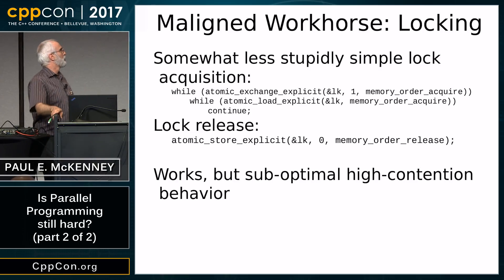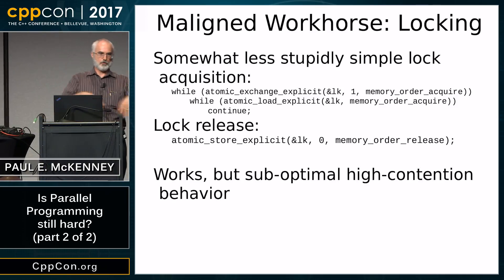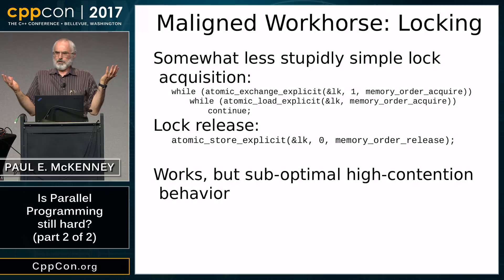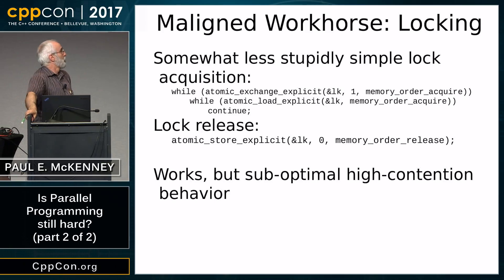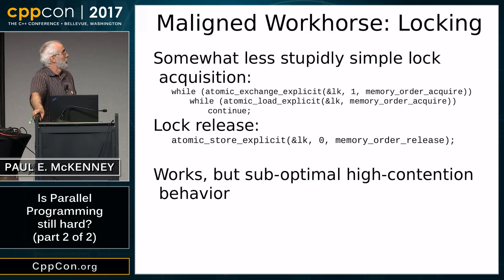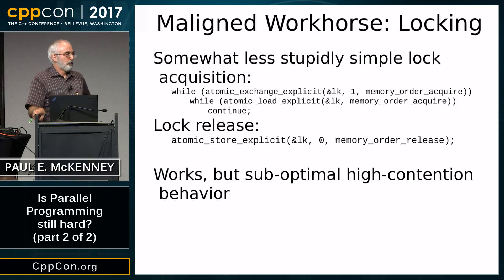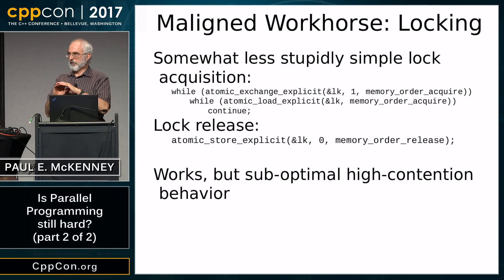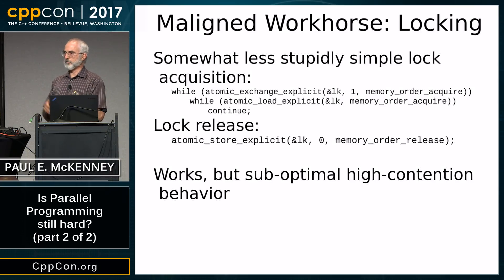We can make something smarter by not doing the exchange over and over — that just batters the cache line around all CPUs. Instead, use a while loop spinning on a plain read, and only once we see the lock is released do we attempt the atomic read-modify-write to acquire it. This way, instead of doing a read-modify-write on the cache line each time, we spin waiting for the value to change, then attempt acquisition only when we have a chance of getting it.